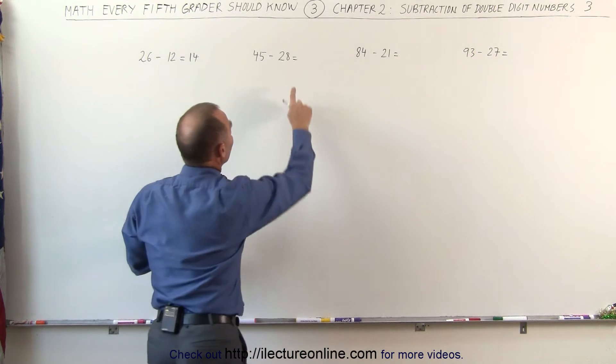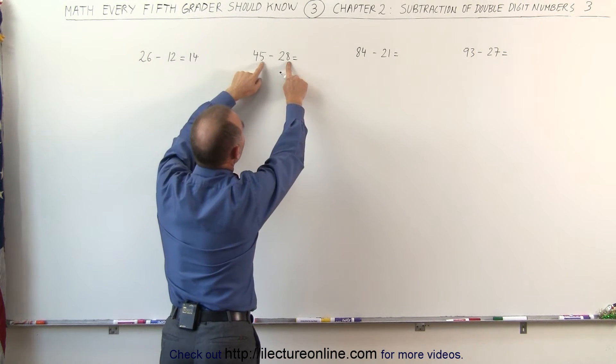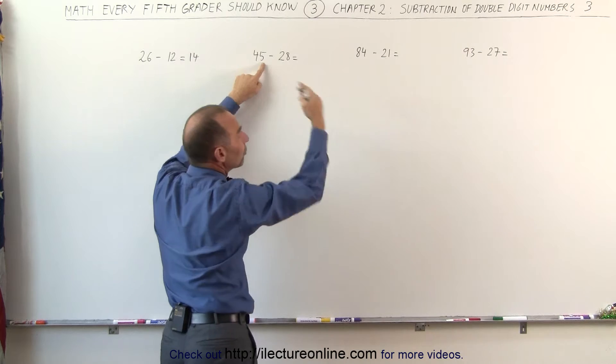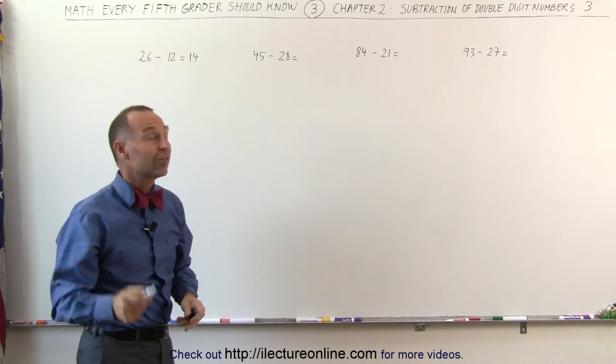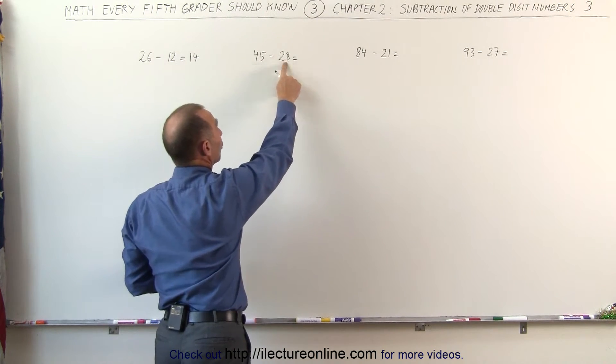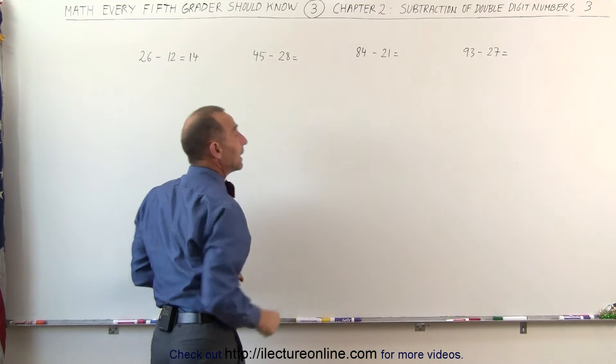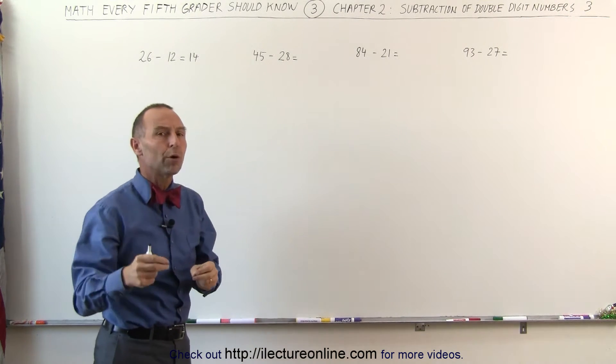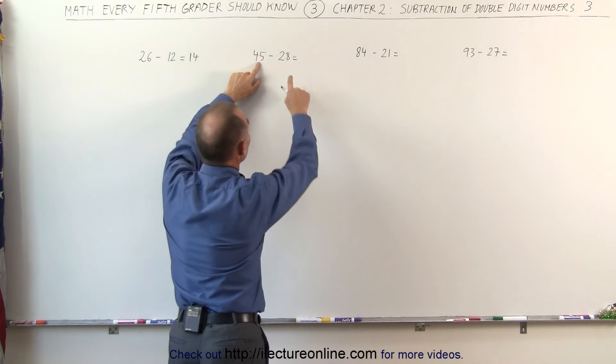But if you have a situation where the second number here, the 8, is bigger than the number 5 here, it makes it more difficult to subtract. What I do instead then is I add 2 more to that and I subtract 30 from 45 instead of 28. I'm subtracting 2 more from the answer or from the original number.